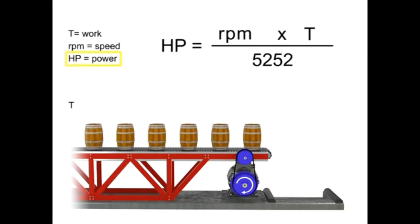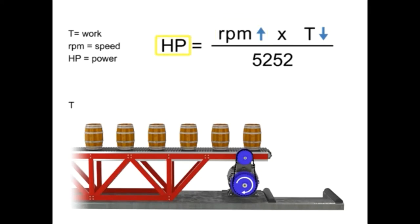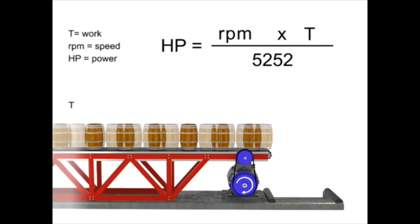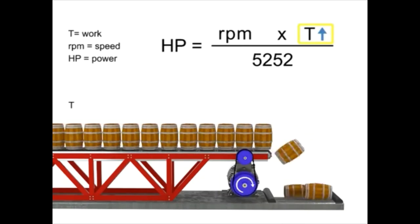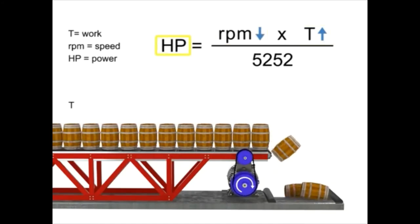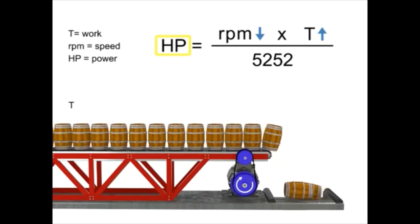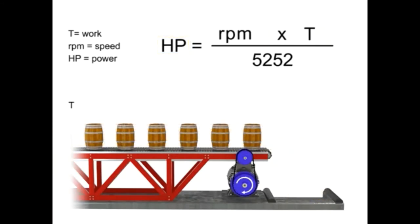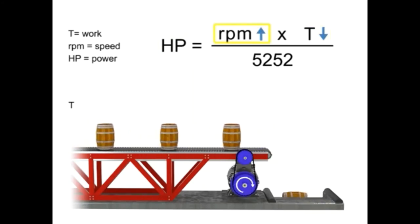If horsepower remains constant, then speed and torque are inversely proportional. As the torque increases, speed decreases to maintain constant horsepower. As torque decreases, speed must increase to maintain constant horsepower. Let's say we want the horsepower of our motor to remain constant but wish to increase the torque. If torque increases, the speed of the conveyor decreases so that the horsepower required of the motor remains constant. Similarly, if the torque decreases, the speed of the conveyor increases and the horsepower generated by the motor remains constant.